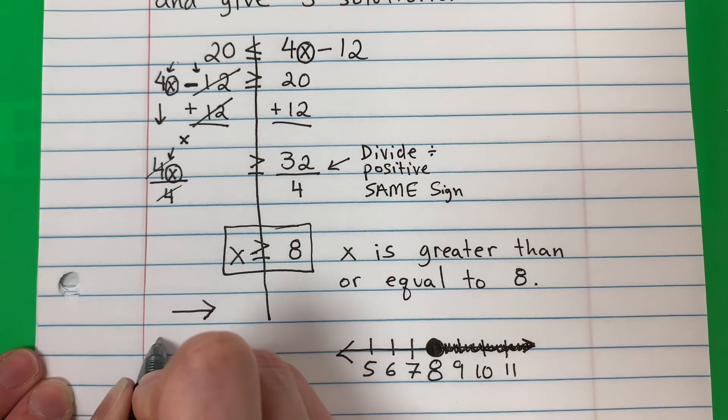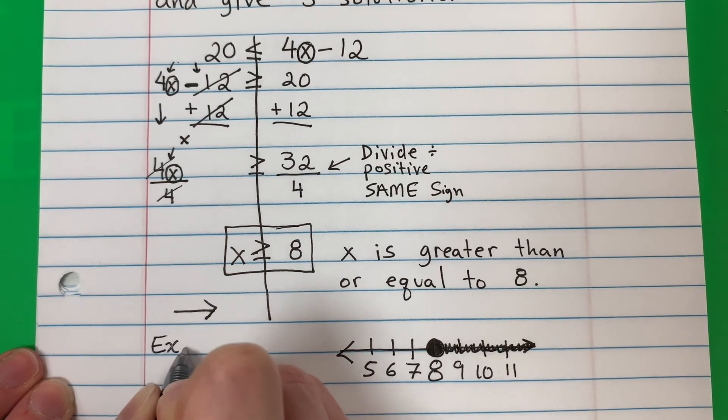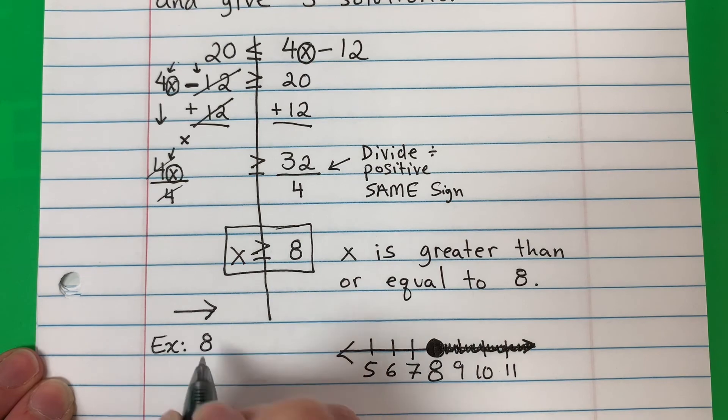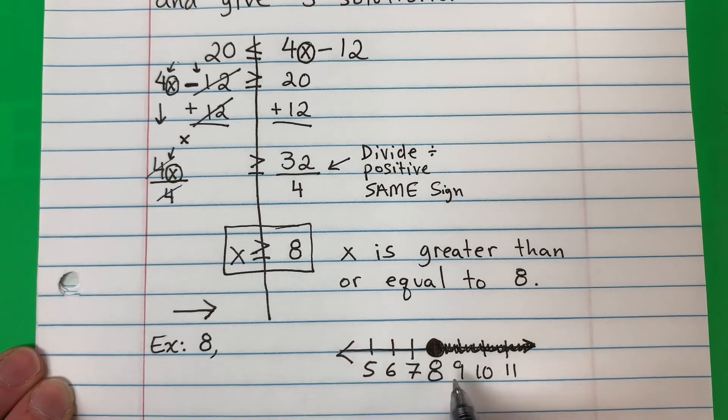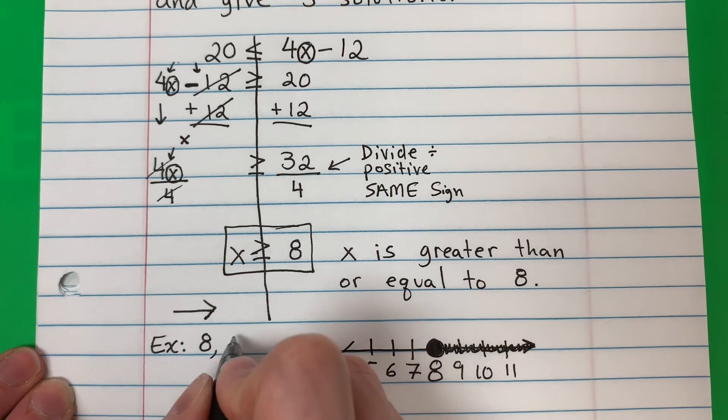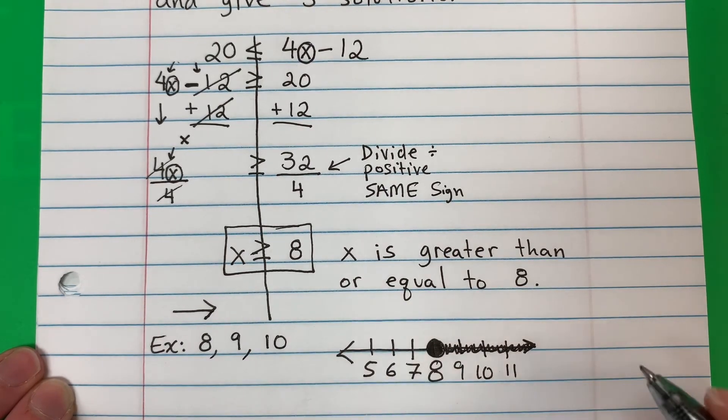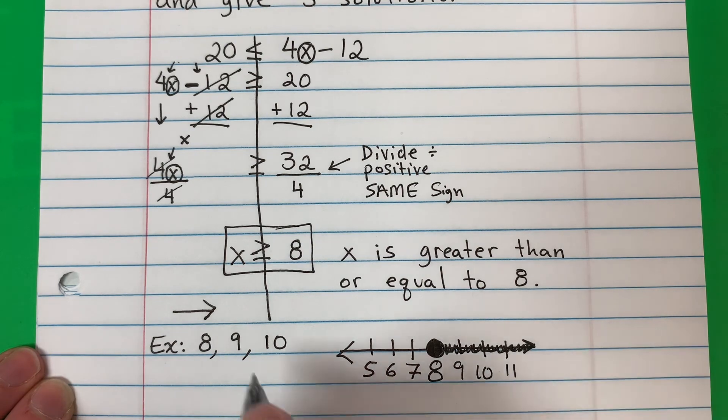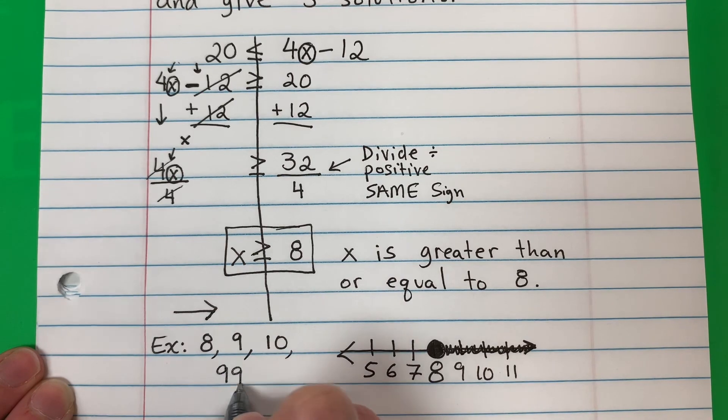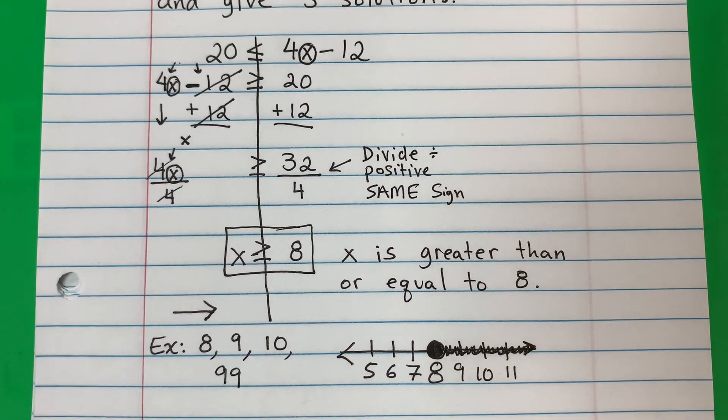So let's give some solutions. So eight is a solution in this case. Also nine, ten, eleven. Remember twelve, thirteen, fourteen, one hundred. So this is an arrow. It will continue forever. So I'll give one more. Ninety nine, for example, is greater than eight.